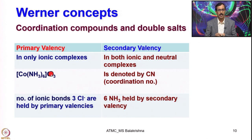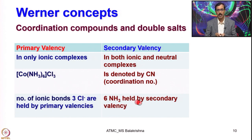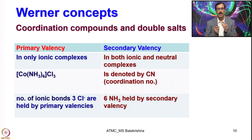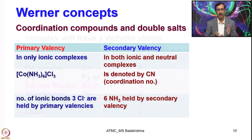The 6 ammonia inside the coordination sphere are involved in covalent bonding and are held by secondary valency. This is how he clearly established the terms primary valency and secondary valency, where secondary valency is nothing but the coordination number. Based on coordination number, he proposed various geometries.